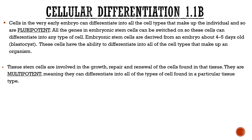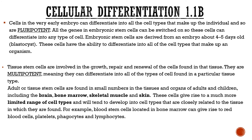Embryonic stem cells don't stay around forever. We have another type called adult stem cells, or tissue stem cells — and 'adult' is a bit of a misnomer, as they actually appear very early in fetal development. Tissue stem cells are described as multipotent: slightly more differentiated, with slightly more switches turned on. They're found in small numbers throughout the body — in the brain, bone marrow, skin, and skeletal muscle — but they only give rise to a limited range of cell types.